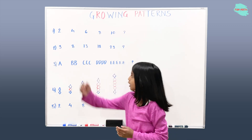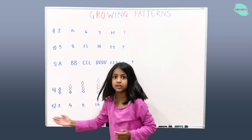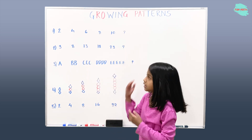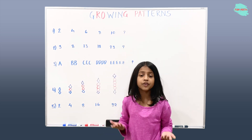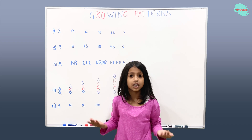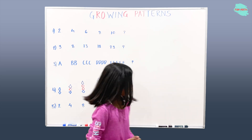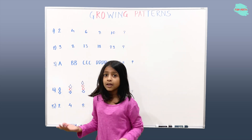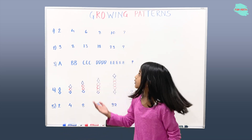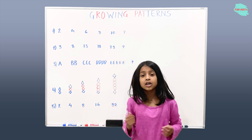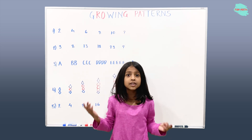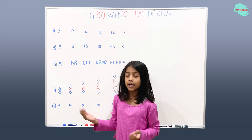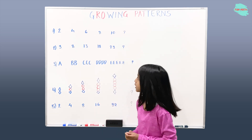So now I have five examples here to understand growing patterns. Let's solve the first example to understand. In example one, we have to find the terms of the relationship. So let's find it out.